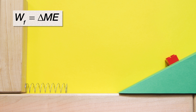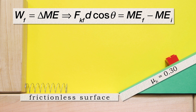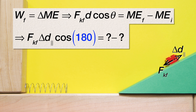Expanding out the equation gives us the work due to friction equals the force of kinetic friction times the displacement of the block times the cosine of the angle between those two vectors. And the change in mechanical energy equals mechanical energy final minus mechanical energy initial. Notice the force of friction only acts on the block while it is on the incline, so the work due to the force of friction is only while the block is on the incline. The angle between the force of kinetic friction, which is down the incline, and the displacement of the block, which is up the incline, is 180 degrees.